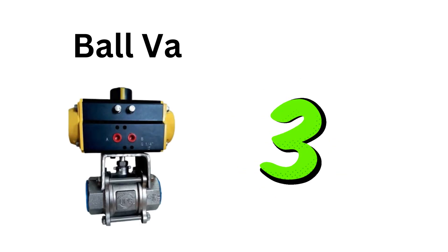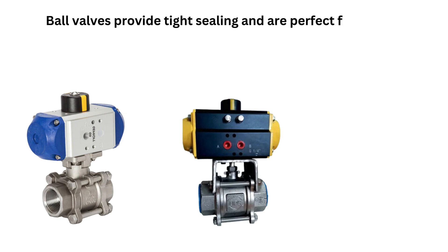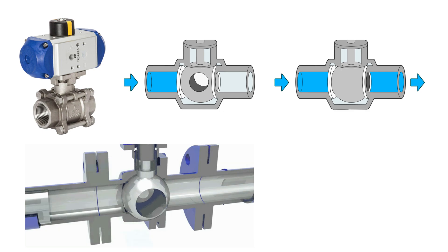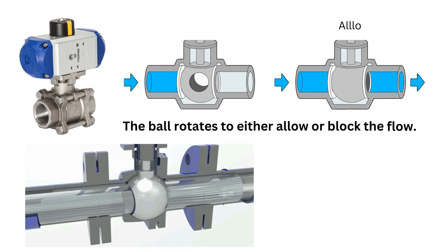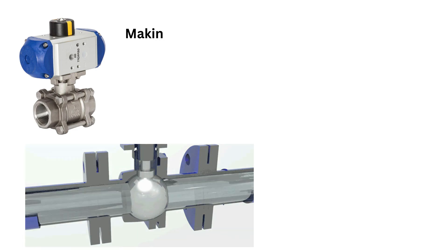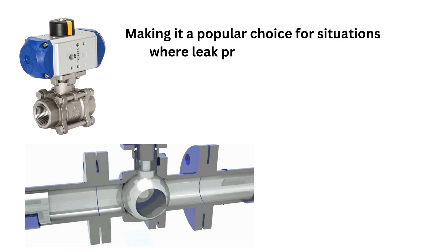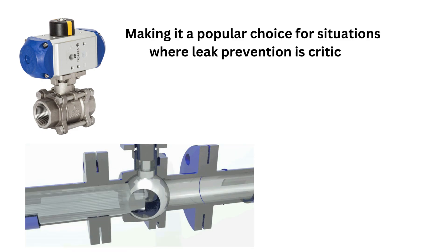The third one is ball valves. Ball valves provide tight sealing and are perfect for on-off control applications. The ball rotates to either allow or block the flow, making it a popular choice for situations where leak prevention is critical.